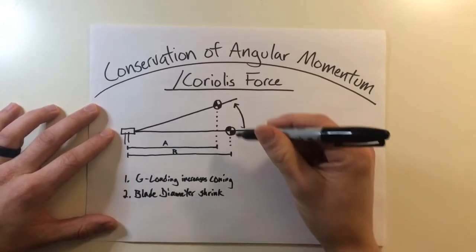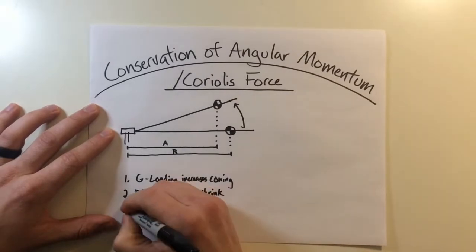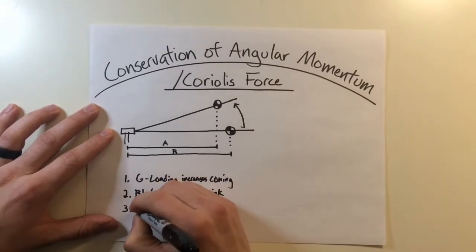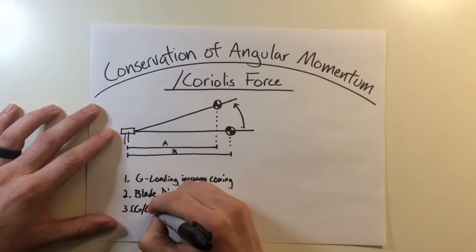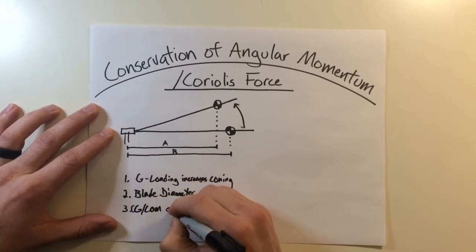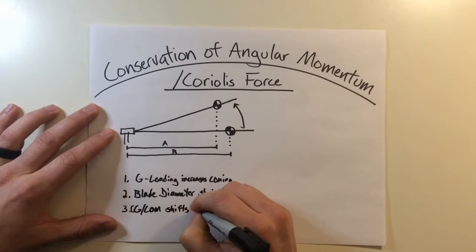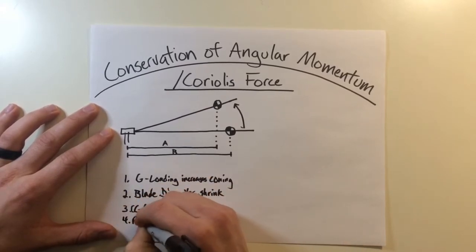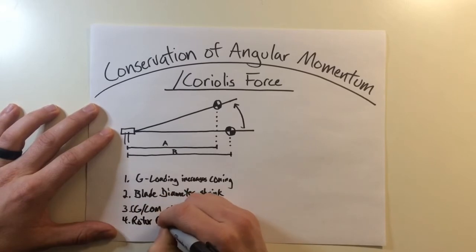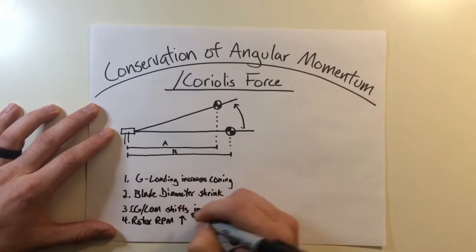Now because of this, your rotor RPM is going to decrease. So back to my steps right here. The center of gravity or your center of mass shifts inwards. And now this causes your rotor RPM to increase.